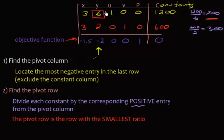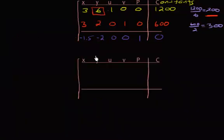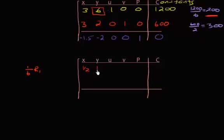Now that six is my pivot element, I need to turn it into a one and then do row operations. To do that, multiply row one by one-sixth: 3 divided by 6 is one-half, 6 divided by 6 is one, giving us one-sixth, zero, zero, and 200.